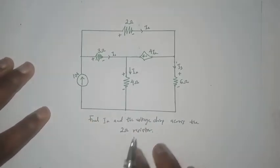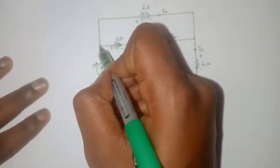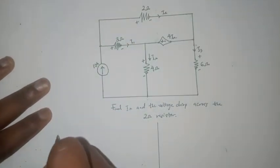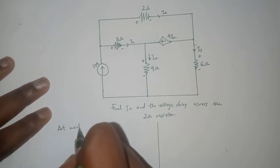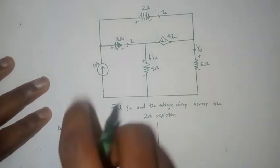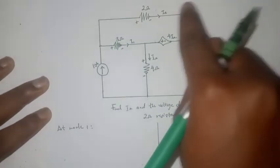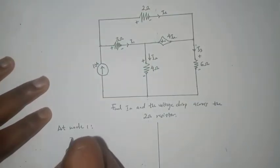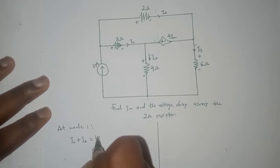So we can then proceed to write our KCL equation. So let's call this node 1. So we say at node 1, the KCL equation, we have 10 amperes entering, i1 and i2 are leaving. So we say that i1 plus i2 equals 10.